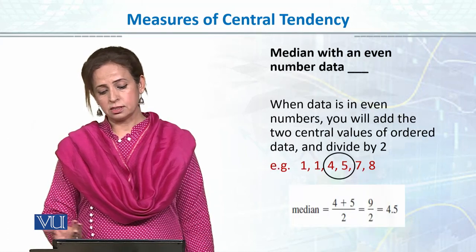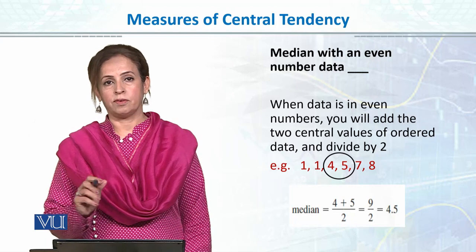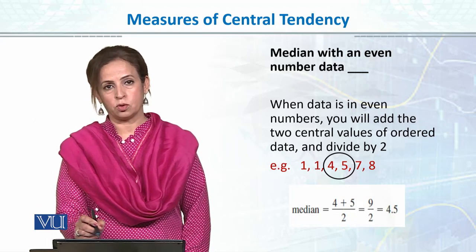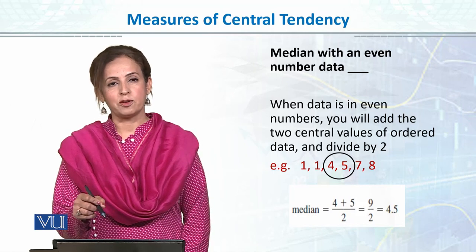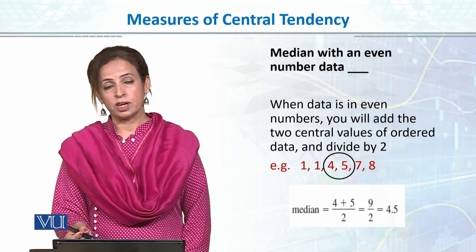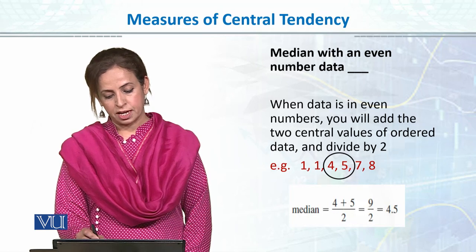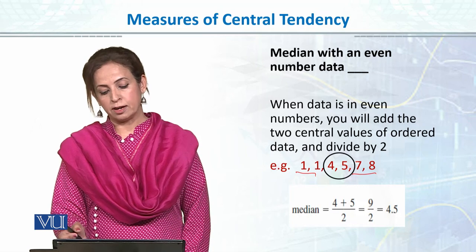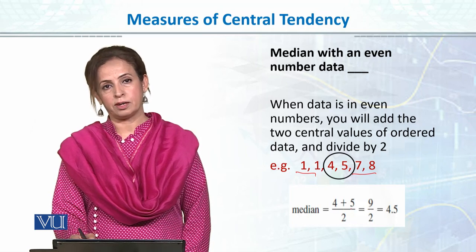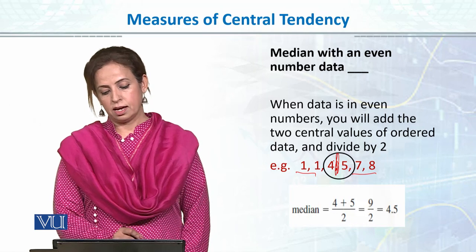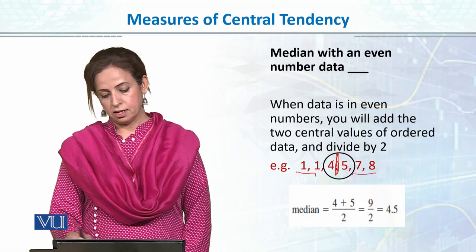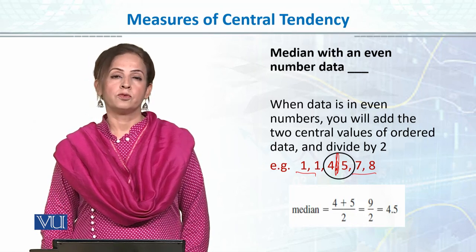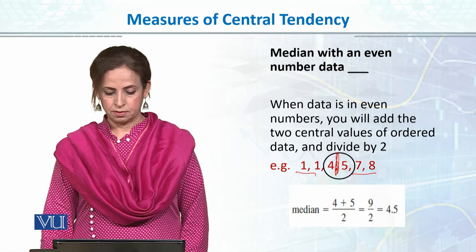Agar humare paas values odd numbers mein hoon, toh hum simply do values idar chhodde hain, do idar chhodde hain, and find the central value. Lekin when we have even numbers, you have to take the two central values — so if we have four and five as the two central values, we will add them and then divide by two to find exactly the center of the data, which is four point five — that would be the median.